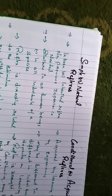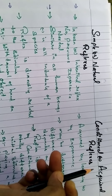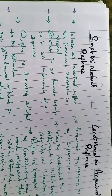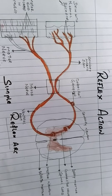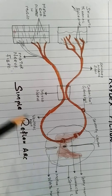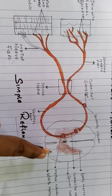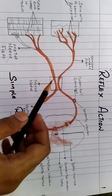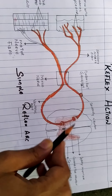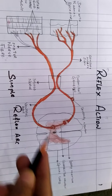So this is how the reflex action takes place. This reflex action pathway involves the spinal cord or the medulla, and it is controlled unconsciously — the cerebrum is not involved. The response is very quick and rapid, occurring within a fraction of a second. The response to the same stimulus is always the same.